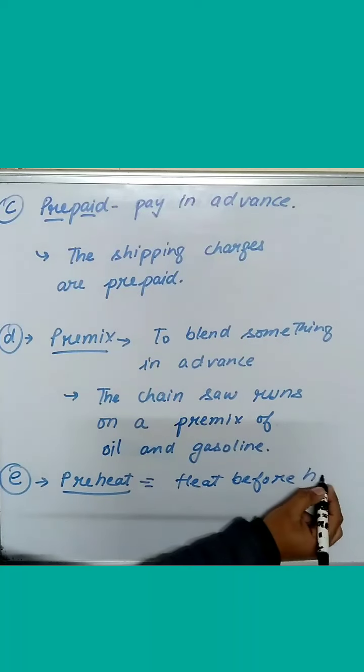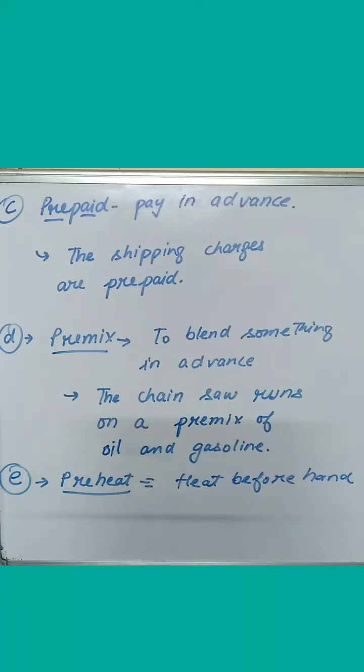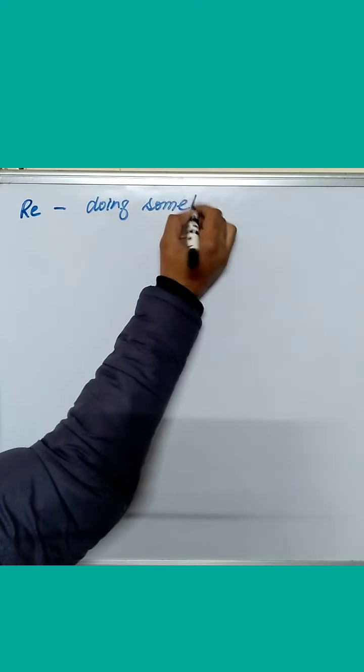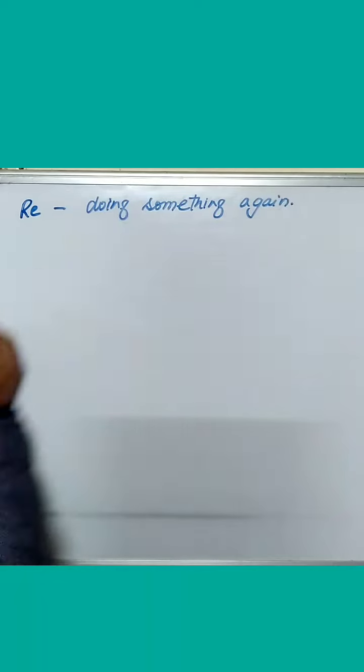The chainsaw runs on a premix of oil and gasoline. The last word that we have is preheat, heat beforehand. The sentence is, preheat the oven to 200 degrees Celsius.